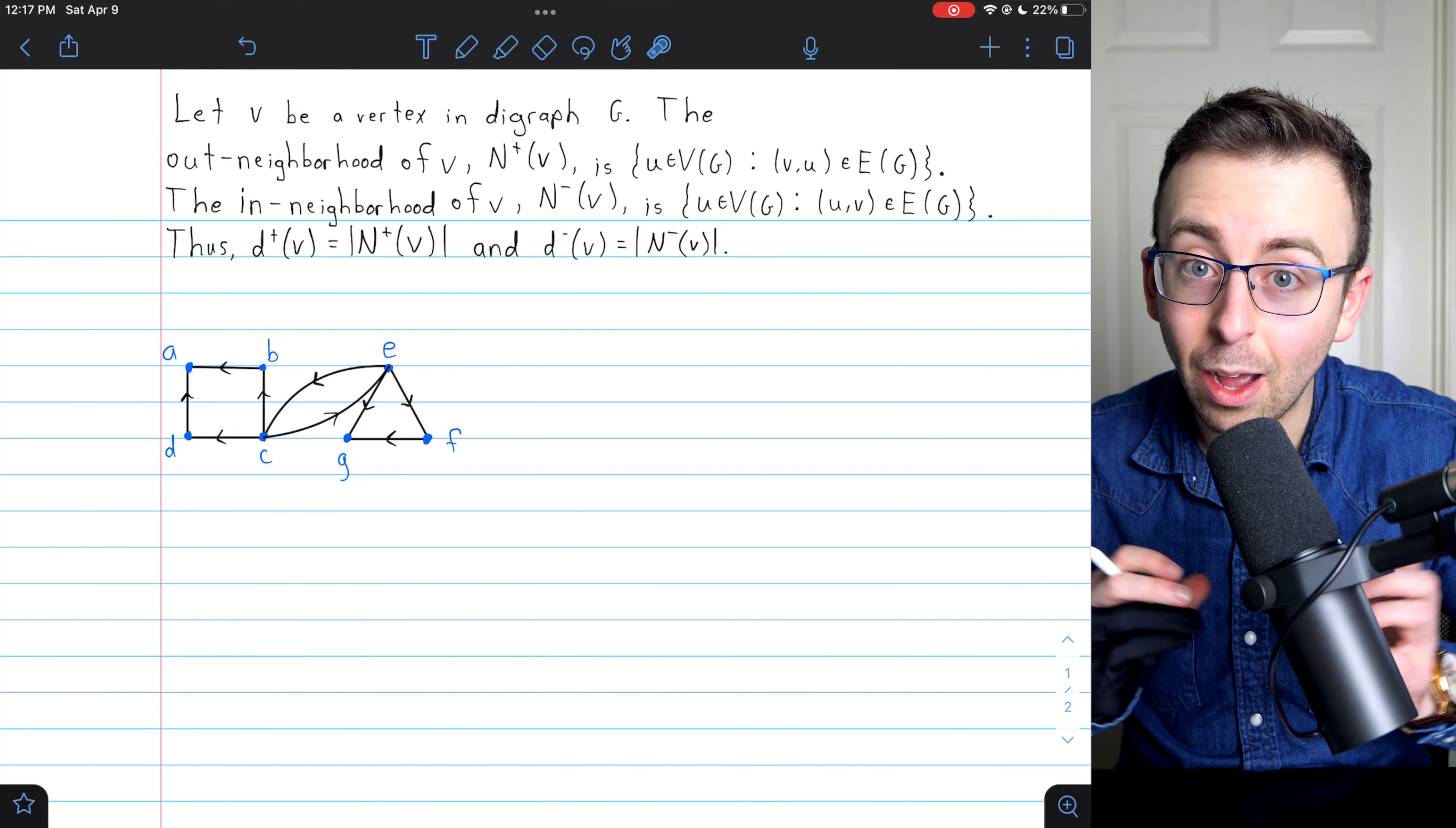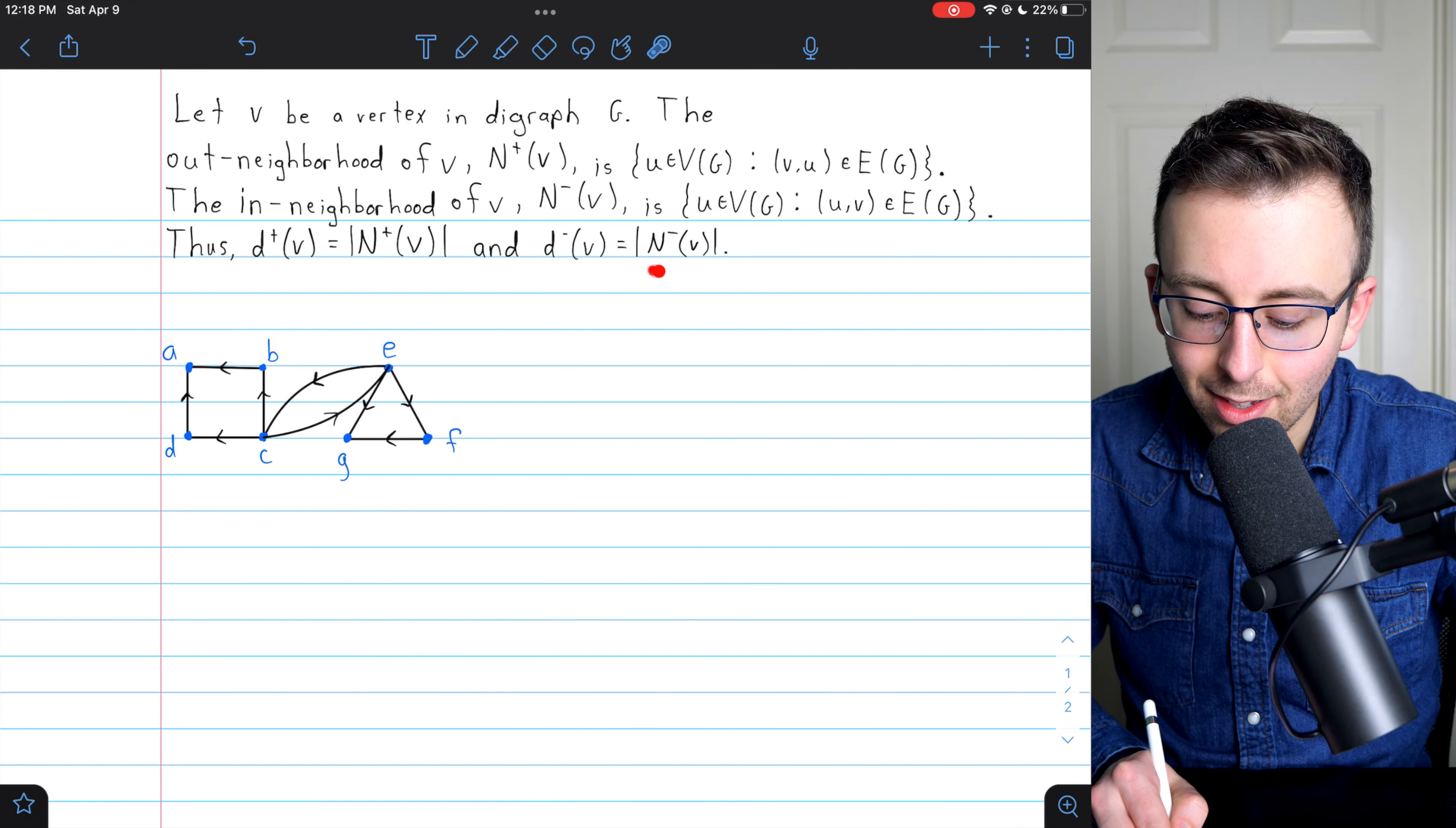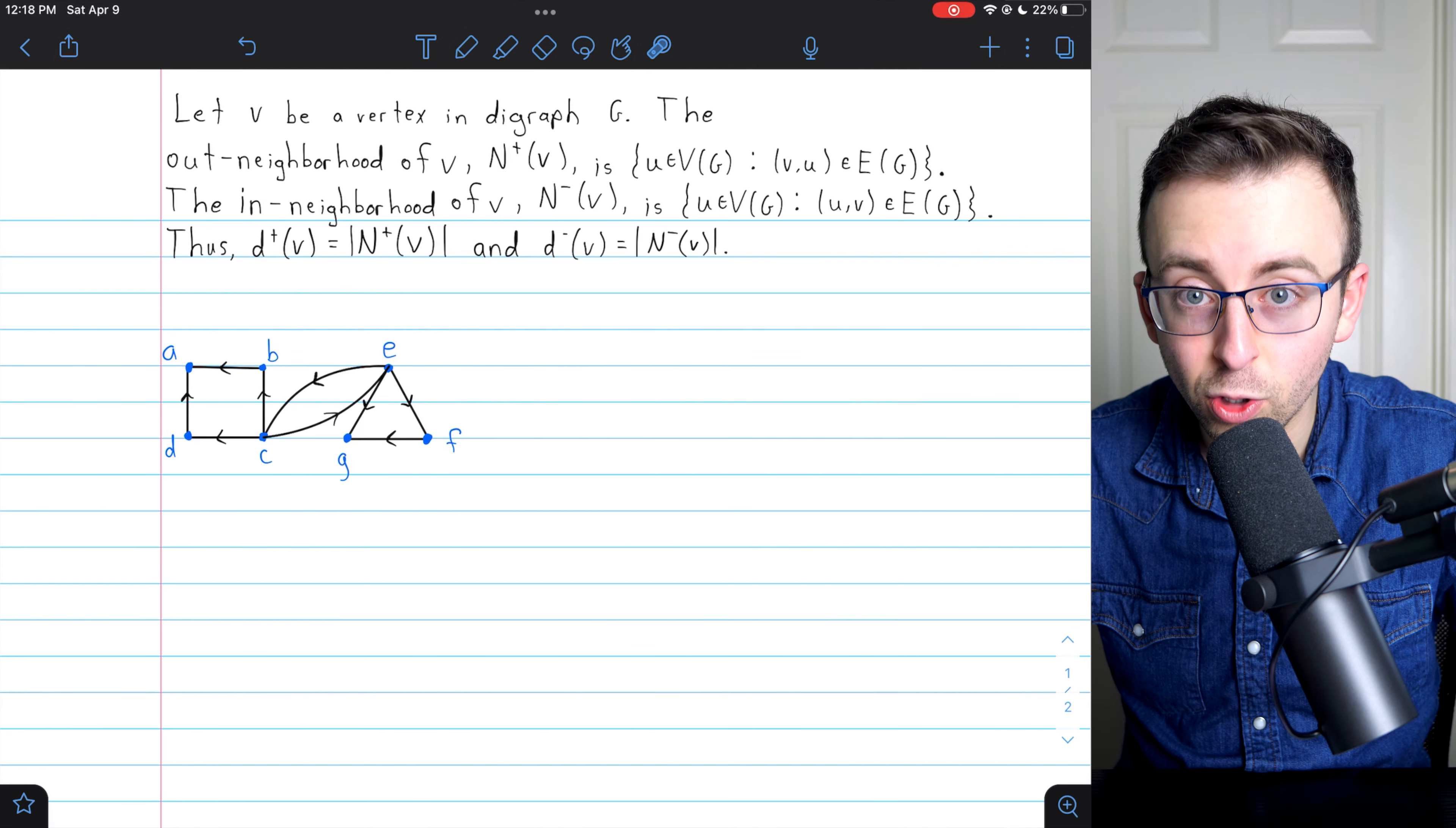So if you're at one of these vertices, you can get directly to V by going across an edge. And thus, by definition, the number of vertices in the in-neighborhood is the same as the in-degree of V. These are the vertices adjacent to V.